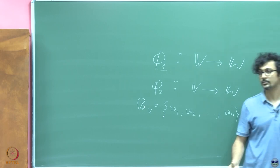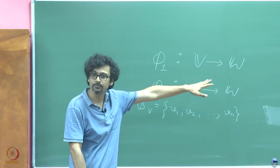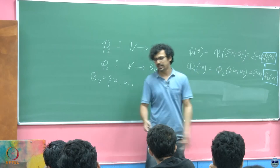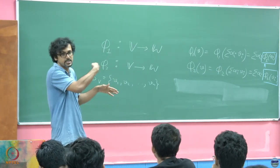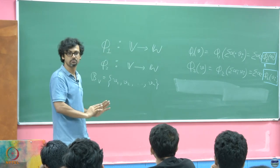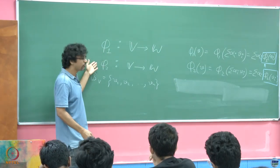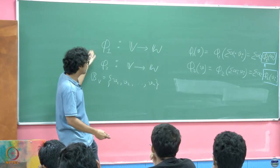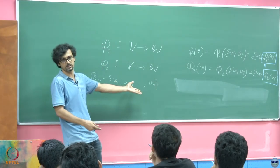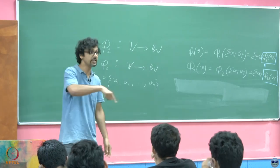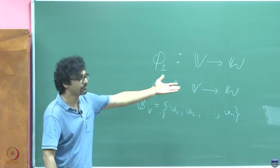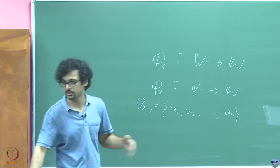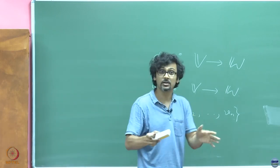We have already laid out some hints in the preceding lecture when we talked about left inverse and right inverse. But today we shall look at them more closely. What exactly do we prove the uniqueness of? We prove the uniqueness of a linear map when it is defined over a basis. If phi1 and phi2 agree on any one basis, then they also agree on every other vector in the vector space.